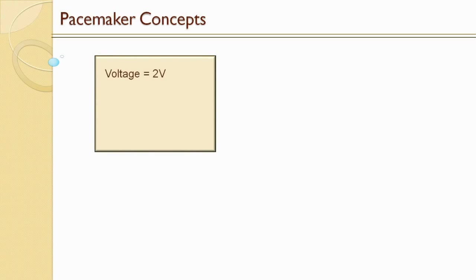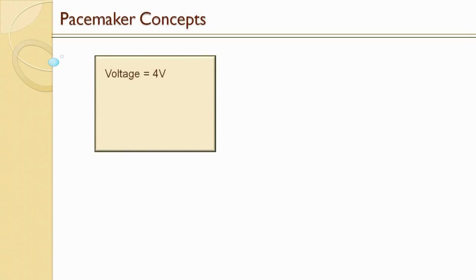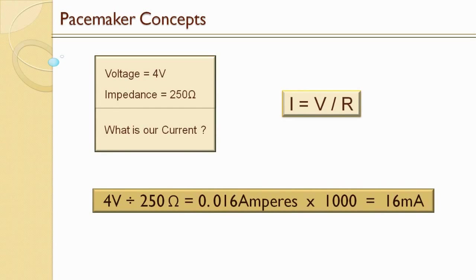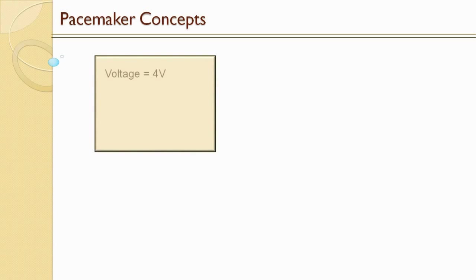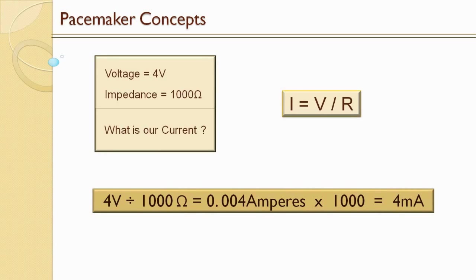Next, let's say we have a pacemaker programmed to 2 volts with impedance still at 500 ohms: 2 volts divided by 500 ohms gives us 0.004 amperes, or 4 milliamps. Next, with 4 volts again but impedance down to 250 ohms: 4 divided by 250 gives us 16 milliamps. And with that same 4 volts but impedance up to 1000 ohms: 4 volts divided by 1000 ohms equals 0.004 amperes, or 4 milliamps.